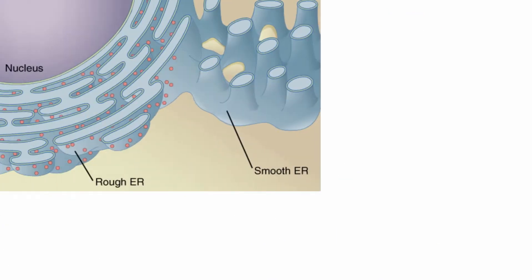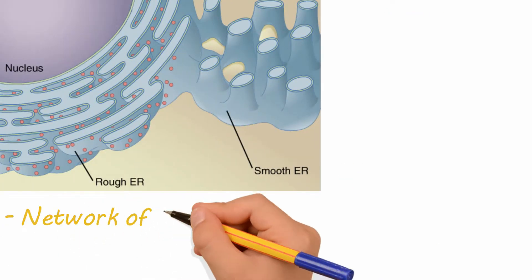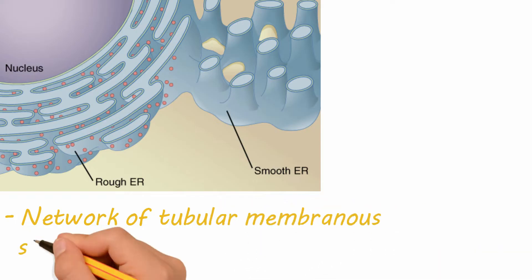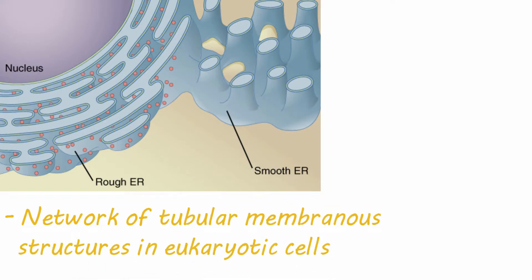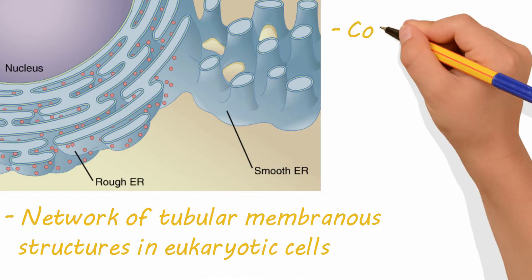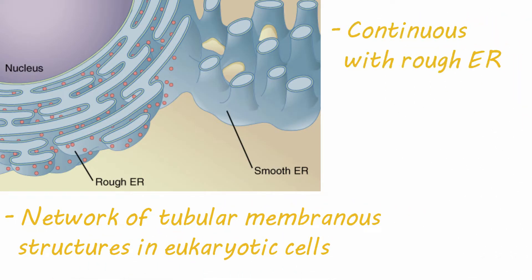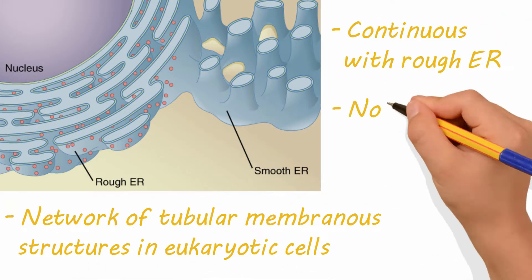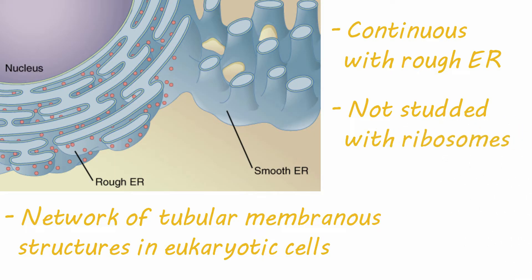The smooth ER is a network of tubular membranous structures in eukaryotic cells. It is continuous with the rough ER but is not studded with ribosomes, hence its smooth name and appearance.